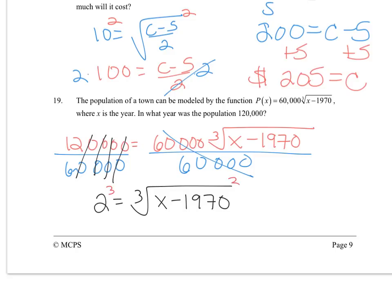Take both sides to the third, and add 1,970. So the year is 1978.